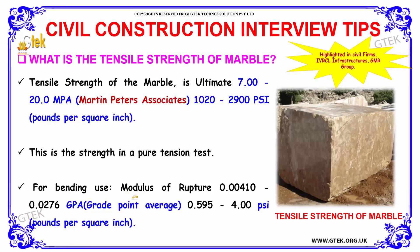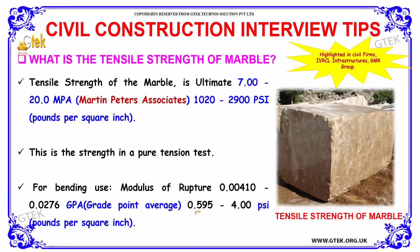For bending use, the modulus of rupture of marble ranges from 0.00410 to 0.0276 GPa (gigapascals), and 0.595 to 4.00 PSI (pounds per square inch). That is the tensile strength profile of marble.